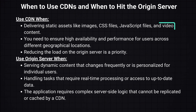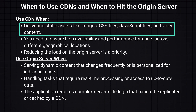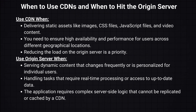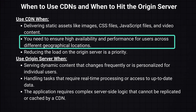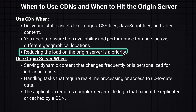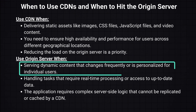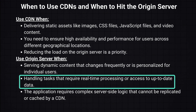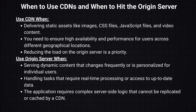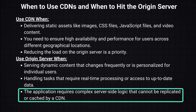CDNs are usually used for delivering static assets like images, CSS files, JavaScript bundles, or video content, and are useful when you need to ensure high availability and performance for users, and can also reduce the load on the origin server. However, there are some instances where we still need to hit our origin server — for example, when serving dynamic content that changes frequently, handling tasks that require real-time processing, or when the application requires complex server-side logic that cannot be done in the CDNs.